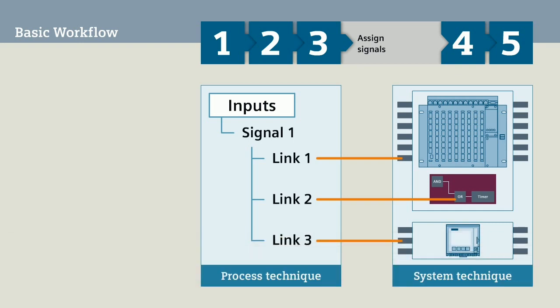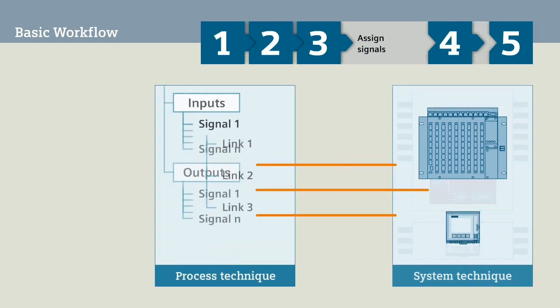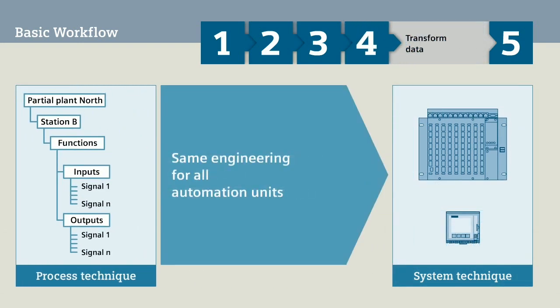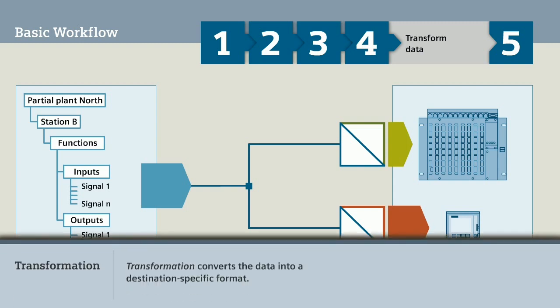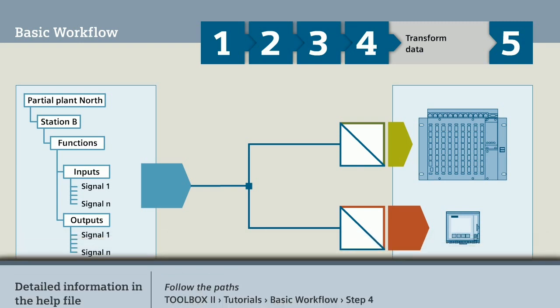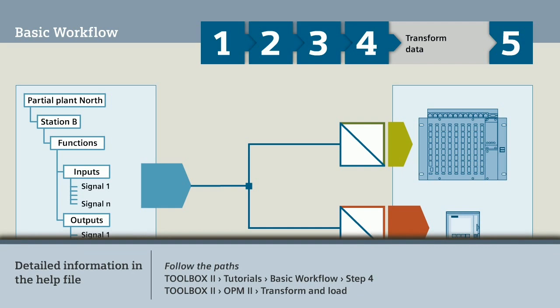Regardless to which destinations you finally assign the signals, the engineering is always the same for you and does not depend on the automation units used. For that reason, the information of the process technique must be prepared for the different automation units in the fourth step of the basic workflow. In the everyday language of CCAM Toolbox 2, this operation is called transformation. Transformation converts the data into a destination-specific format. You can find detailed information about transforming in the help file via the displayed path.